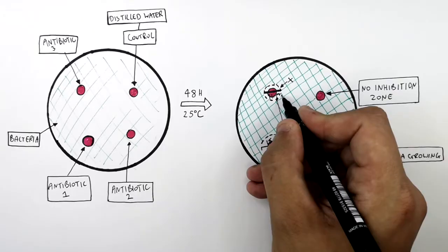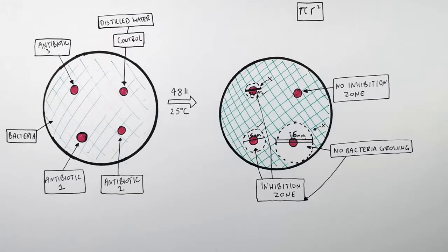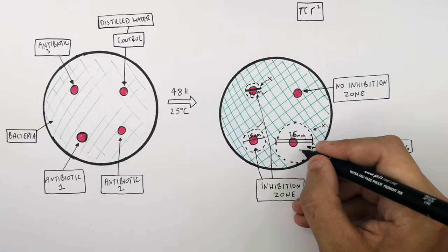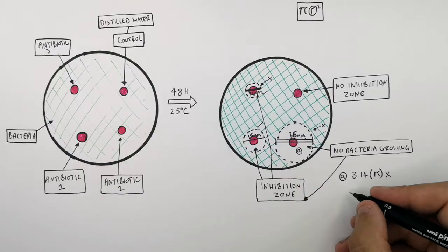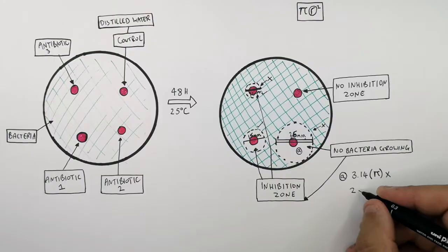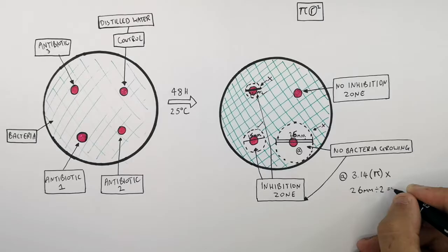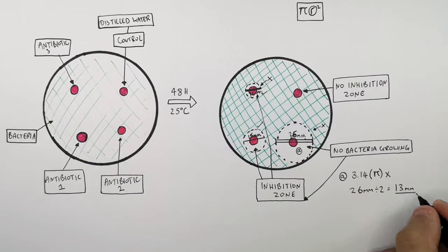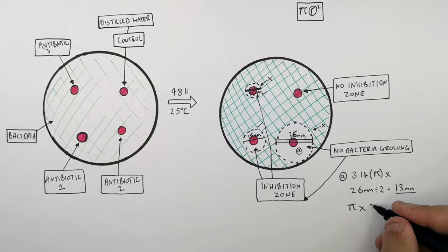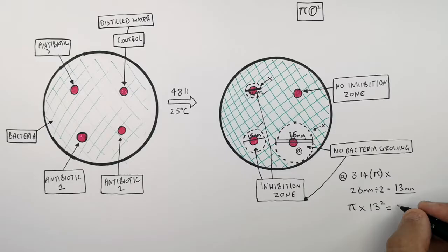To calculate the area of the zone of inhibition you use the formula: area of a circle = π r². We'll calculate the area for antibiotic 2. Its diameter is 26 mm, so the radius is 26 ÷ 2 = 13 mm. Area = π × 13² = 530 mm². So the area of the zone of inhibition around antibiotic 2 is 530 mm².